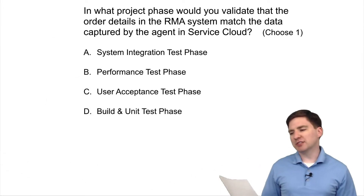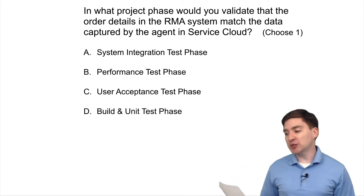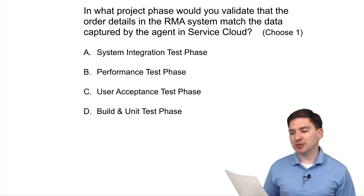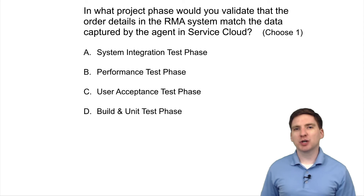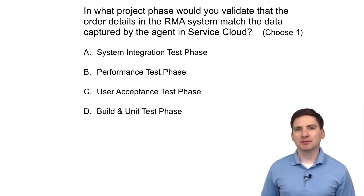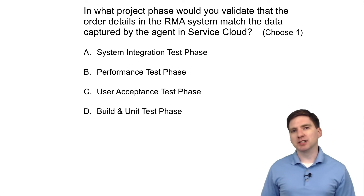In what project phase would you validate that the order details in the RMA system match the data captured by agents in Service Cloud? A: System integration test phase. B: Performance test phase. C: User acceptance test phase. D: Build and unit test phase.